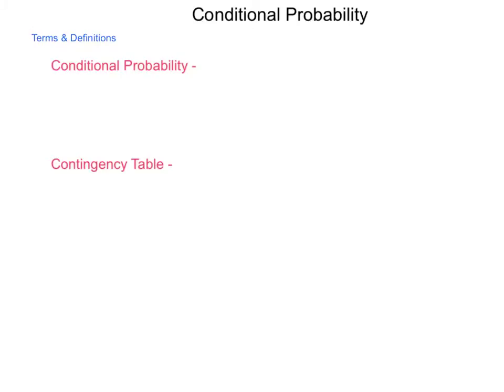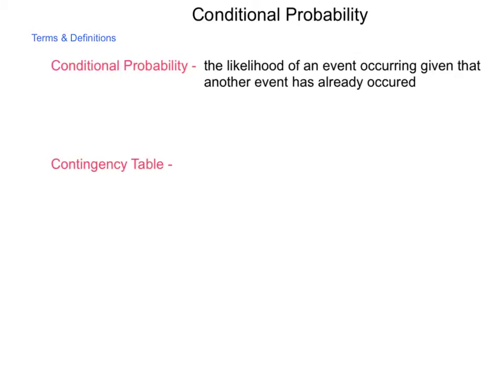Conditional probability is the likelihood or probability of an event occurring given that another event has already occurred. When we're looking at conditional probability, like the probability of multiple events, we have multiple items. The way we write a conditional probability is the probability of A given B, meaning we're looking at event A happening knowing that event B has already happened.